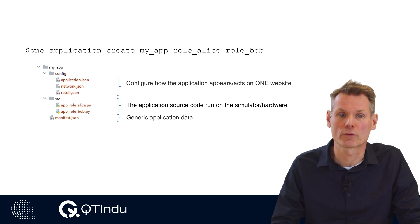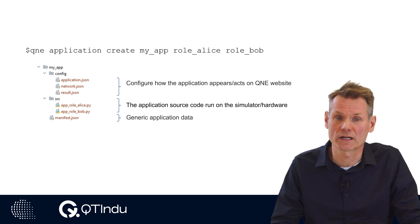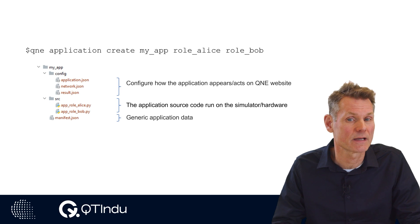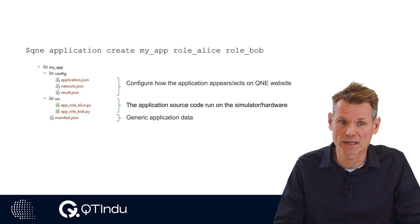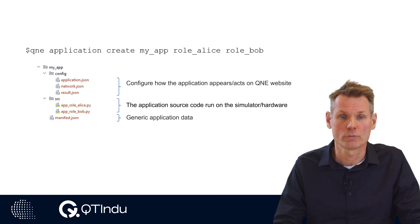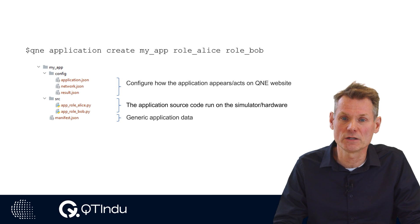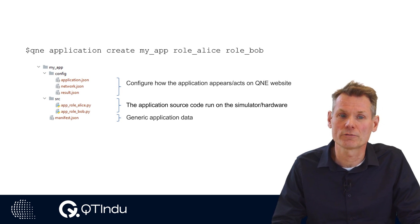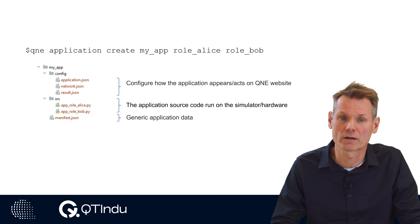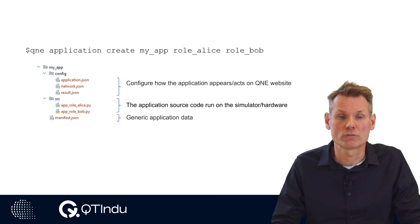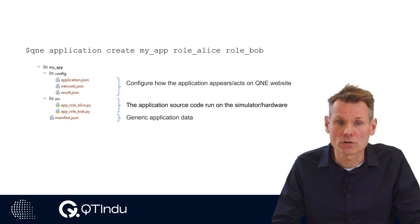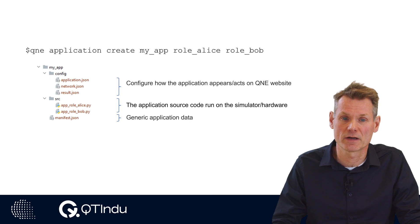Quantum Network Explorer is able to run experiments for totally different applications in the same generic user interface, without changing the front-end and back-end code for each new application. We do this via configuration files defined in the directory config. In the next section we dive deeper into the structure and content of these configuration files.